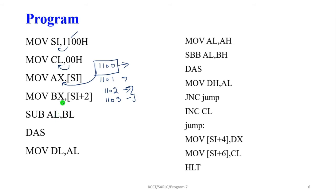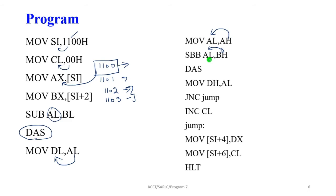Perform subtraction between AL and BL; the result is stored in AL. This is not a BCD number, so we perform the adjust using the DAS instruction — the result is stored in AL and then moved into DL. Next, the high byte of the minuend (AH) is moved into AL. Then perform subtraction between AL and BH; the result is stored in AL. It is not a BCD number, so adjust to BCD using DAS. The result in AL is then moved into DH.